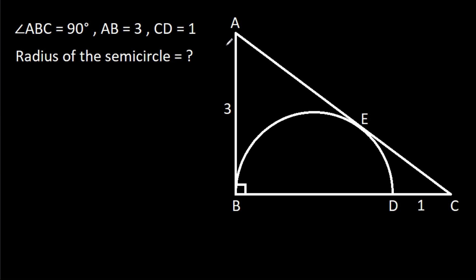In this video, we have been given that angle ABC is 90 degrees, AB is 3, CD is 1, and then we have to find the radius of the semicircle.